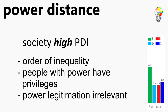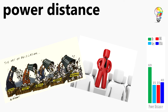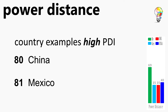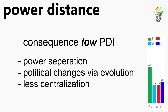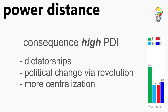Societies with high power distance believe there ought to be an order of inequality and everyone has their rightful place. High and low power holders are protected by that hierarchy and it is existential for inequality. Those who inherit power are entitled to privileges and the legitimacy of power is irrelevant. An example is the directive style in corporations leading to guidance, direction and highly respected leaders. Country examples are Mexico with a score of 81 and China with 80. For low PDI countries this means a separation of power, political change by evolution and less centralization. High PDI countries have dictatorships and oligarchies, political change by revolution and more centralization as the goal.